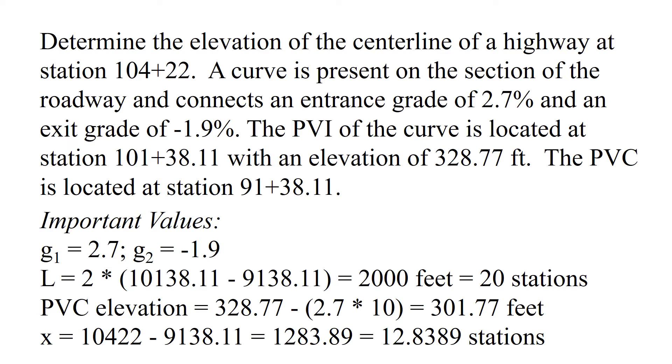The next important term is the PVC elevation, which is element c of our parabolic equation. We're going to find this based on our elevation of the PVI, which is 328.77, and we're going to subtract off